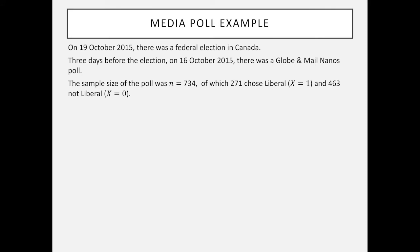Let's take an example from newspaper reports of an election. In the election in 2015, there was a poll conducted by the Globe and Mail newspaper but it was conducted by the company Nanos. In their sample size they had 734. I got this information from the news report. Of the 734, 271 chose Liberal and the other people chose something not Liberal. That could include people planning to vote for another political party or simply planning not to vote or they hadn't decided.